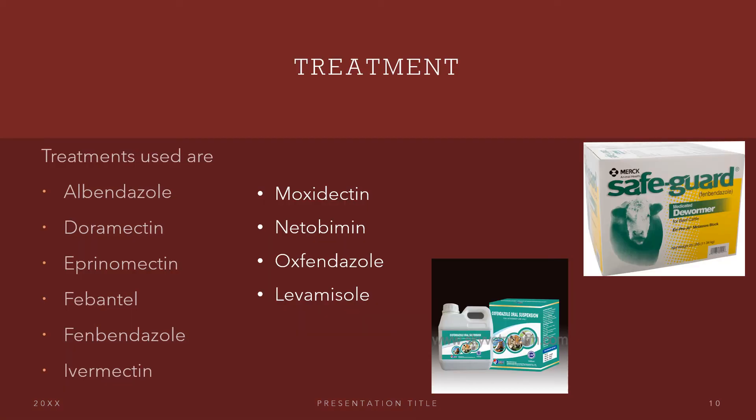Lastly, let's talk about the preventative measures and the treatment. They go hand in hand. You will have to give treatments to your cattle in order for this not to happen. The treatments that are commonly used are albendazole, doramectin, eprinomectin, febantel, fenbendazole, ivermectin, moxidectin, netobimin, oxfendazole, and lastly levamisole.